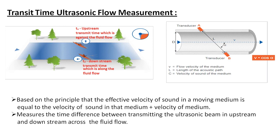Transit time ultrasonic flow measurement is based on the principle that the effective velocity of sound in a moving medium equals the velocity of sound in that medium plus the velocity of the medium. For example, the velocity of ultrasound in water is 1497 meters per second at 25 degrees centigrade, and the fluid velocity is added to that.